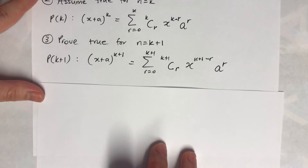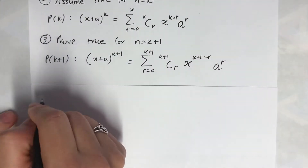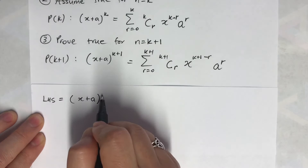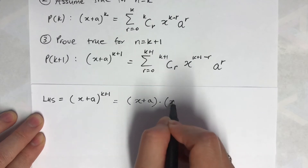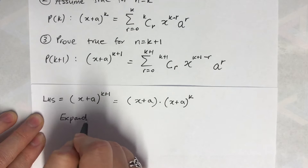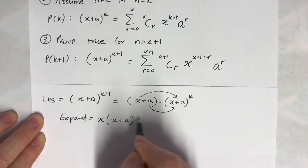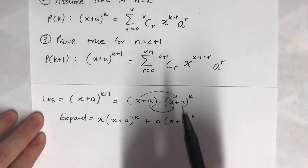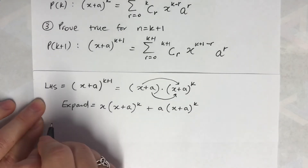I'm going to work on the left hand side here. I'll write (x + a)^(k+1), which I can simply write as (x + a)^k · (x + a). That's not too bad so far. Now I'm going to expand this — that times that and that times that. And as you can see from the assumed part, (x + a)^k can be replaced with the sigma expression from step 2.